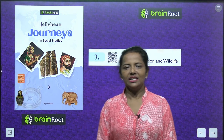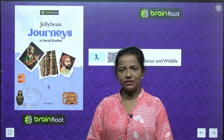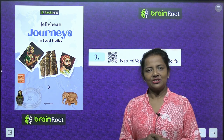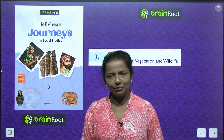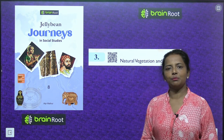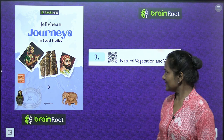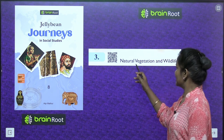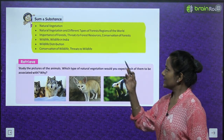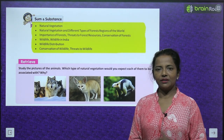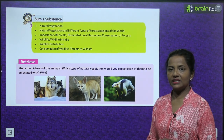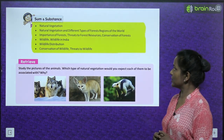Hello learners, hope you all are doing well. This is your learning buddy Prajita with a new chapter from Genuine Journeys in Social Studies Class 8 by Brain Root Series. Today we start Chapter 3: Natural Vegetation and Wildlife, from the geography section. We'll read about natural vegetation and different types of forest regions of the world.